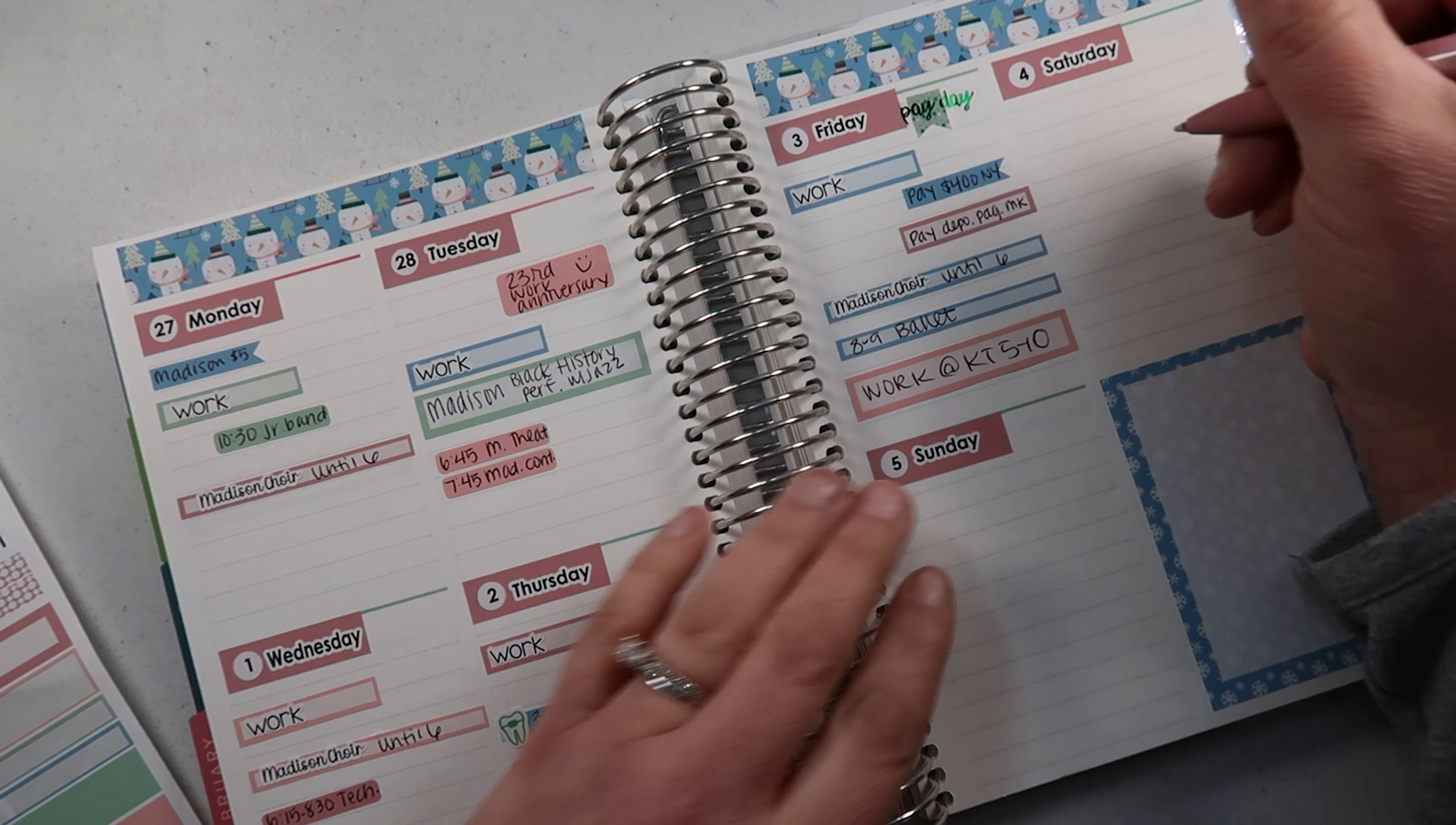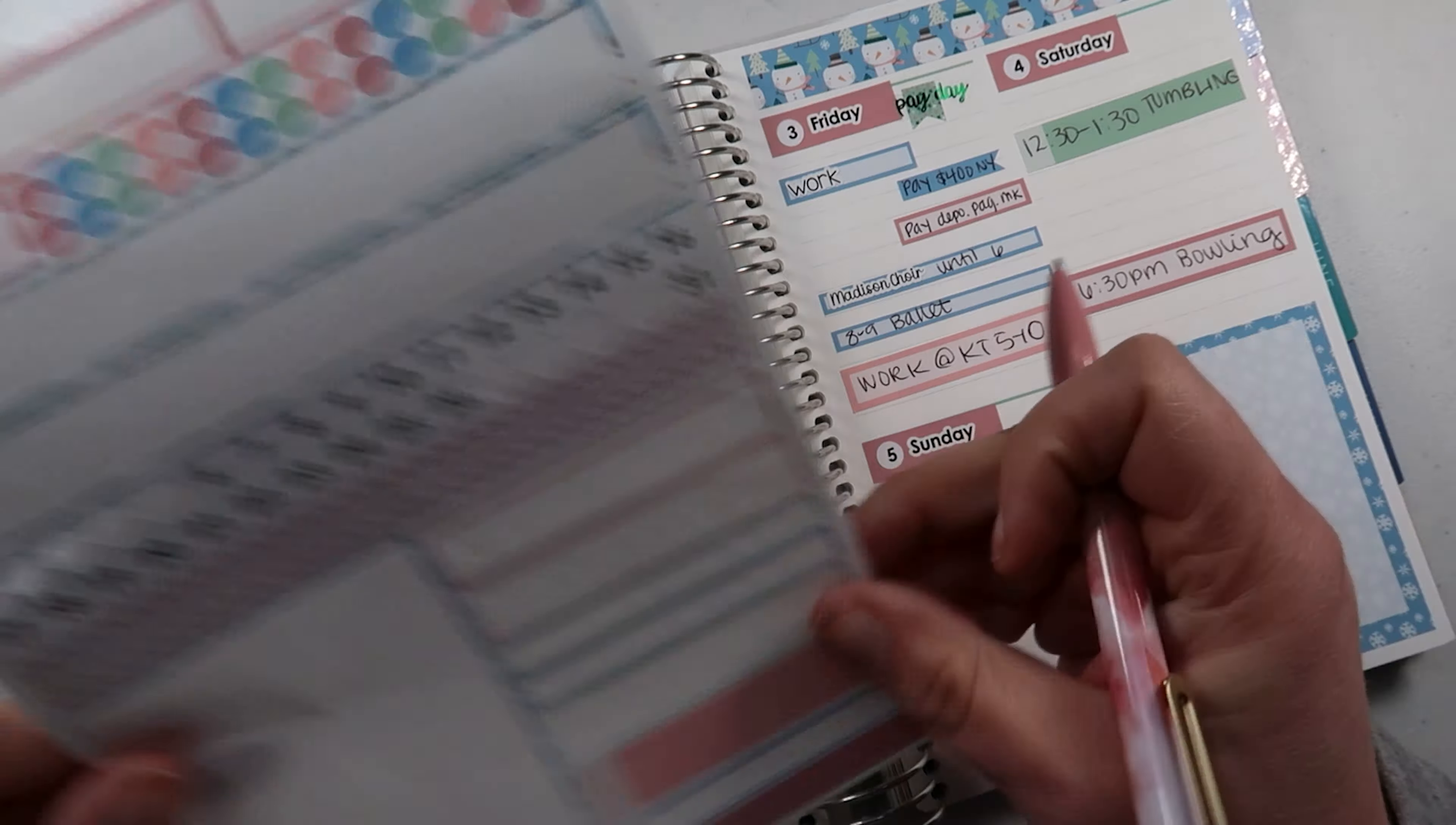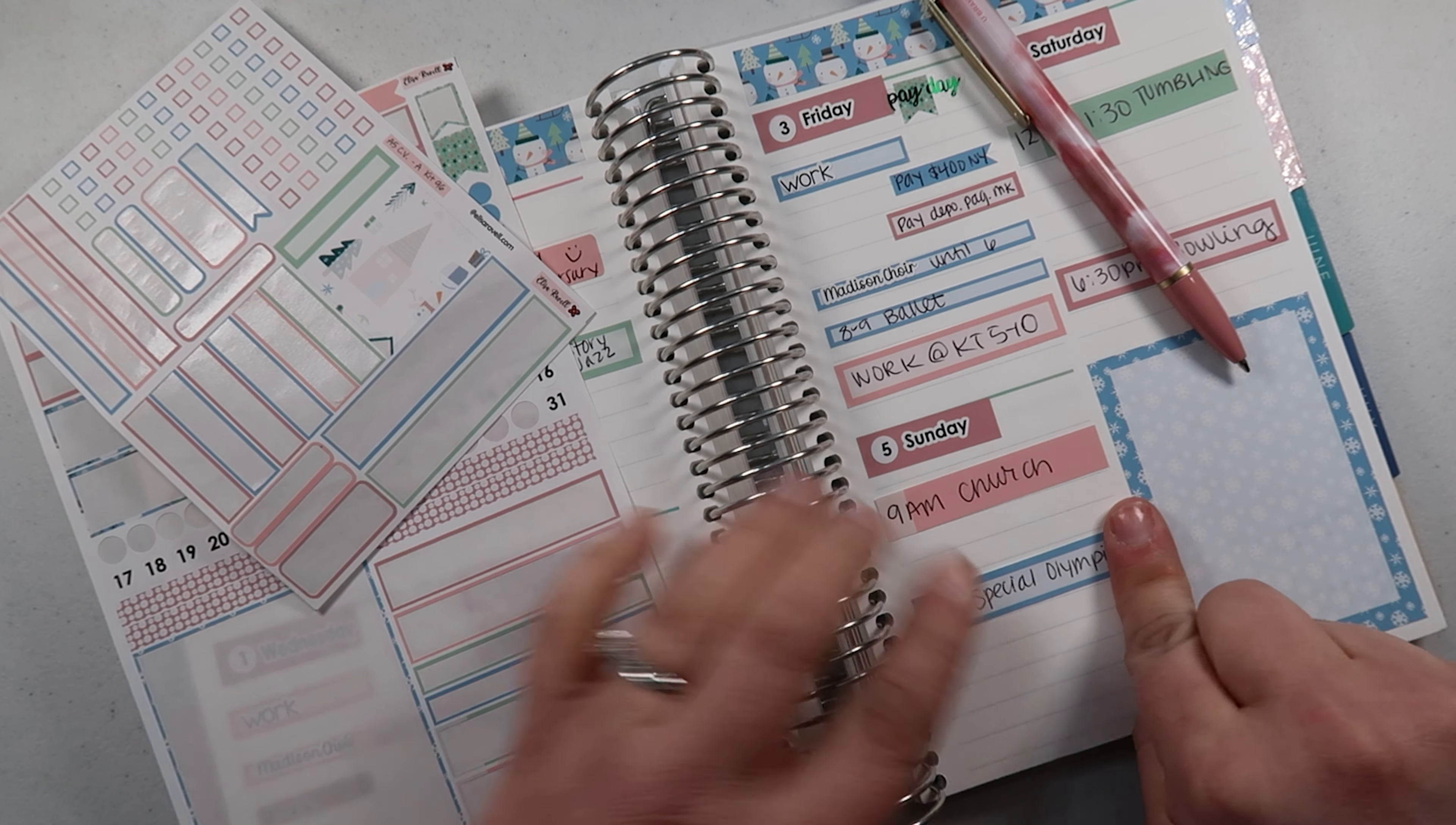And then the fourth, Lauren has tumbling from 12:30 to 1:30. And I don't have to work this day, so that's exciting. And then at 6:30 we have bowling league. I might try to pick up a shift this day, but I don't know yet, we shall see. And then the fifth we have church at 9 a.m. And then at 2 to 4 there is something that's really special. There is a Special Olympics event at Bailey's school that I want to go ahead and help out with. So I'm hoping that I can go do that.